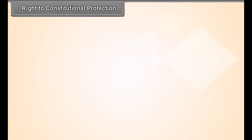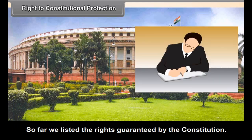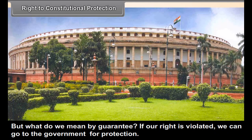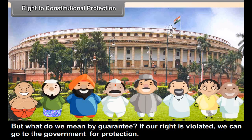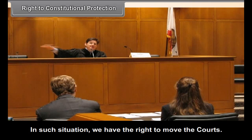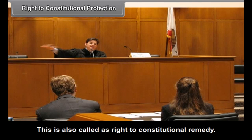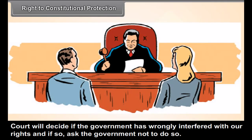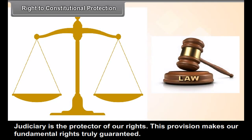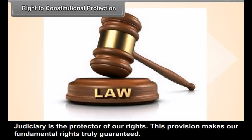Right to constitutional protection: We have listed the rights guaranteed by the constitution, but what do we mean by guarantee? If our right is violated, we can go to the government for protection. But what will happen if some officer or the government itself violates or does not respect our rights? In such a situation, we have the right to move the courts. This is also called the right to constitutional remedy. The court will decide if the government has wrongly interfered with our rights and, if so, ask the government not to do so. Judiciary is the protector of our rights. This provision makes our fundamental rights truly guaranteed.